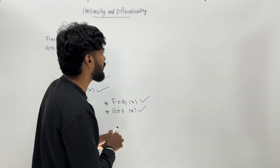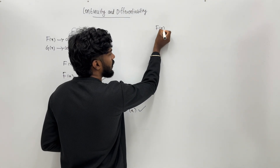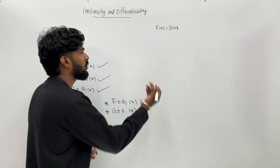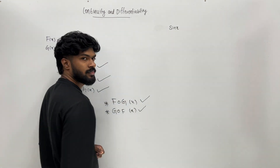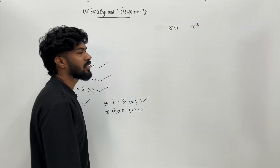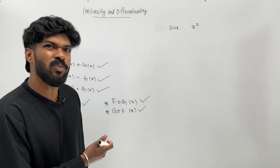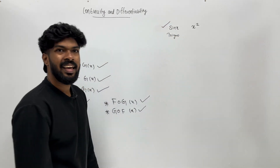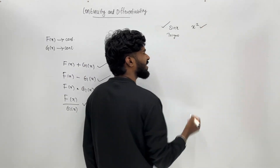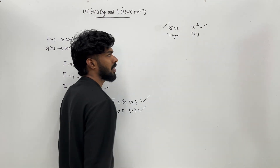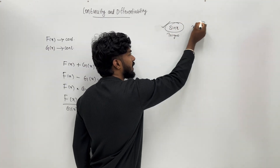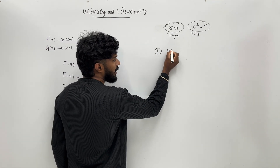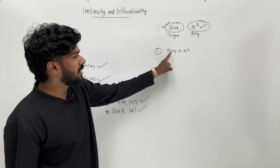Let's say f of x equals sin x, and x squared is another function. sin x is a trigonometric function, which is continuous. x squared is a polynomial function, which is also continuous. So sin x squared — the composition — is continuous.